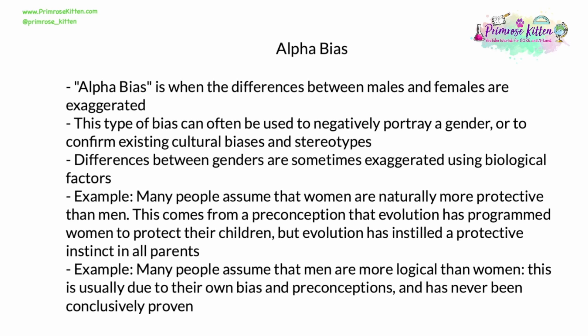Alpha bias is when the differences between males and females are exaggerated. This type of bias can often be used to negatively portray a gender, as is so often done in the media, or to confirm existing cultural biases and stereotypes — for example, that women are more emotional. The differences between the genders are sometimes exaggerated using biological factors. For example, many people assume that women are naturally more protective than men, stemming from a preconception that evolution has programmed women to protect their children. But evolution has instilled a protective instinct in all parents, regardless of their gender.